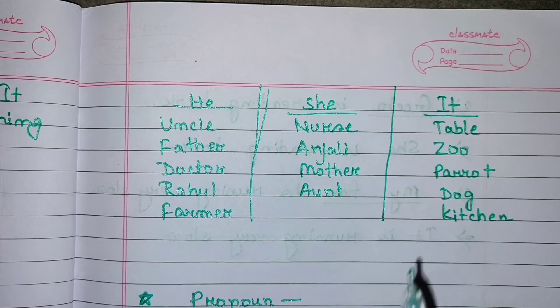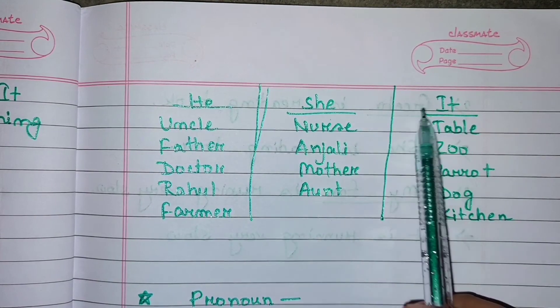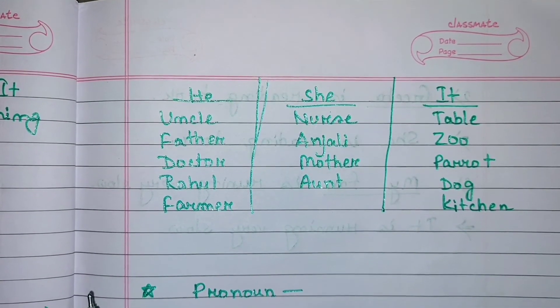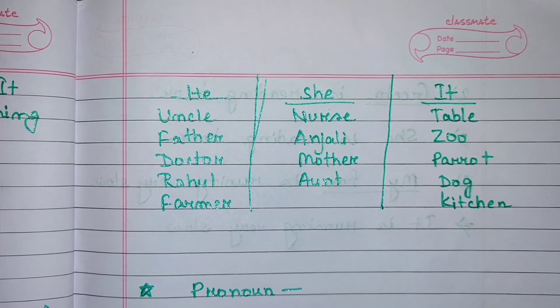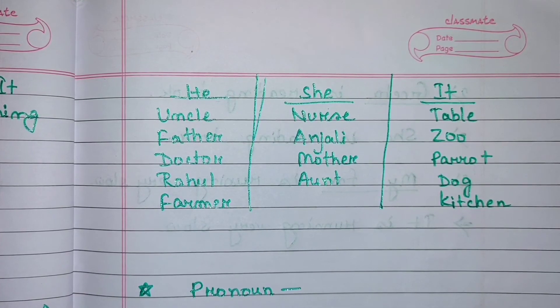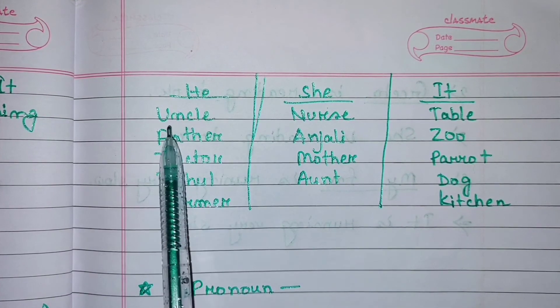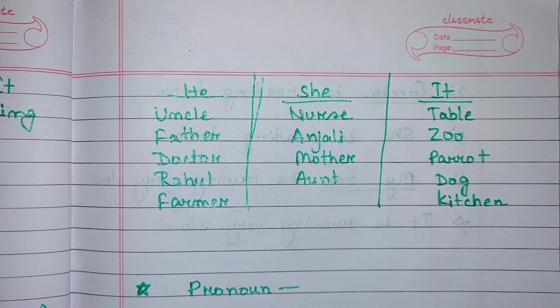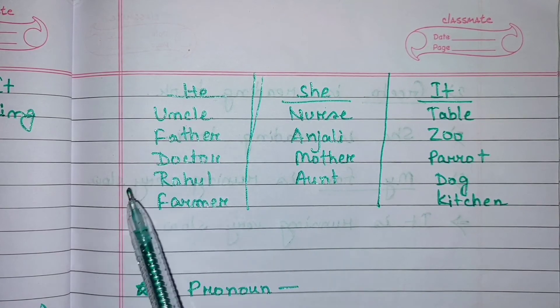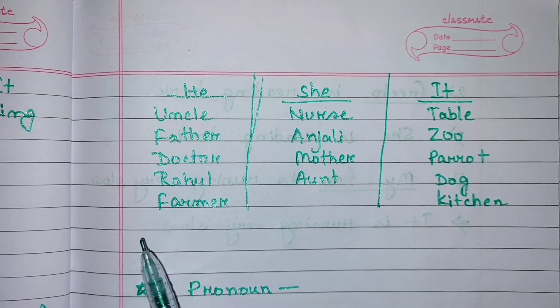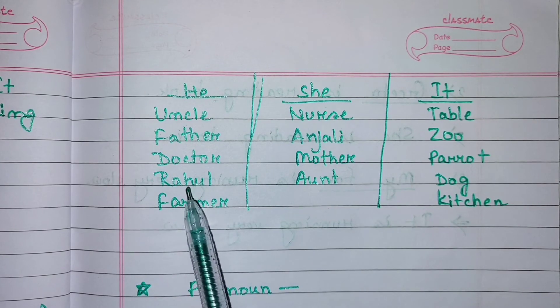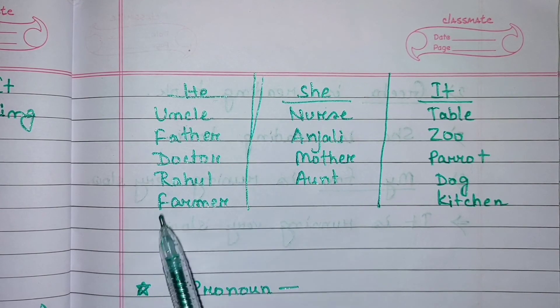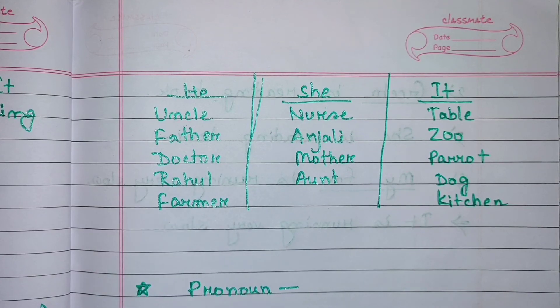Let's see the chart. He pronoun, she pronoun, it pronoun - what is included? He - we can use uncle. Because uncle is the male gender. Uncle, father, doctor, Rahul, farmer, any male name. For any male name we use he pronoun.